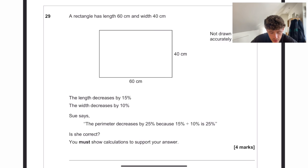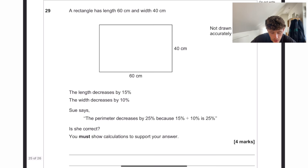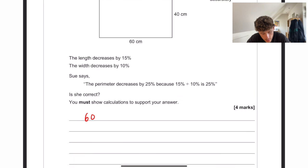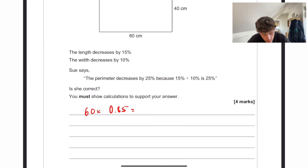A rectangle has a length of 60 and a width of 40. The length decreases by 15% and the width decreases by 10%. So first of all, what do those decreases correlate to in terms of a length? So 60 times by 0.85 would show a decrease of 15%. That equals 51. And 40 times by 0.9 will be 36.